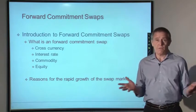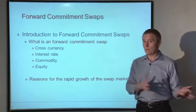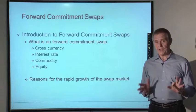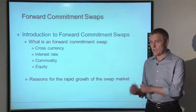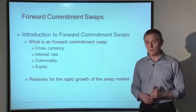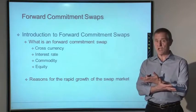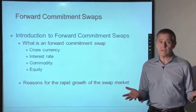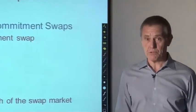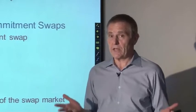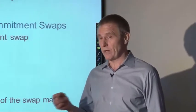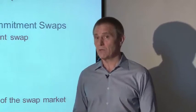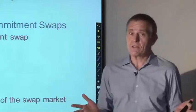The buyer of an option acquires a right — the right to buy if it's a call, the right to sell if it's a put — while the seller, also called the option writer, incurs an obligation. Compare that to forward commitment contracts, where parties exchange obligations to do something. If those obligations are exchanged at fair value, neither party has an advantage, which is why the contracts have no cost. With options, it's a very unequal contractual situation, so the buyer invariably has to pay the seller something.